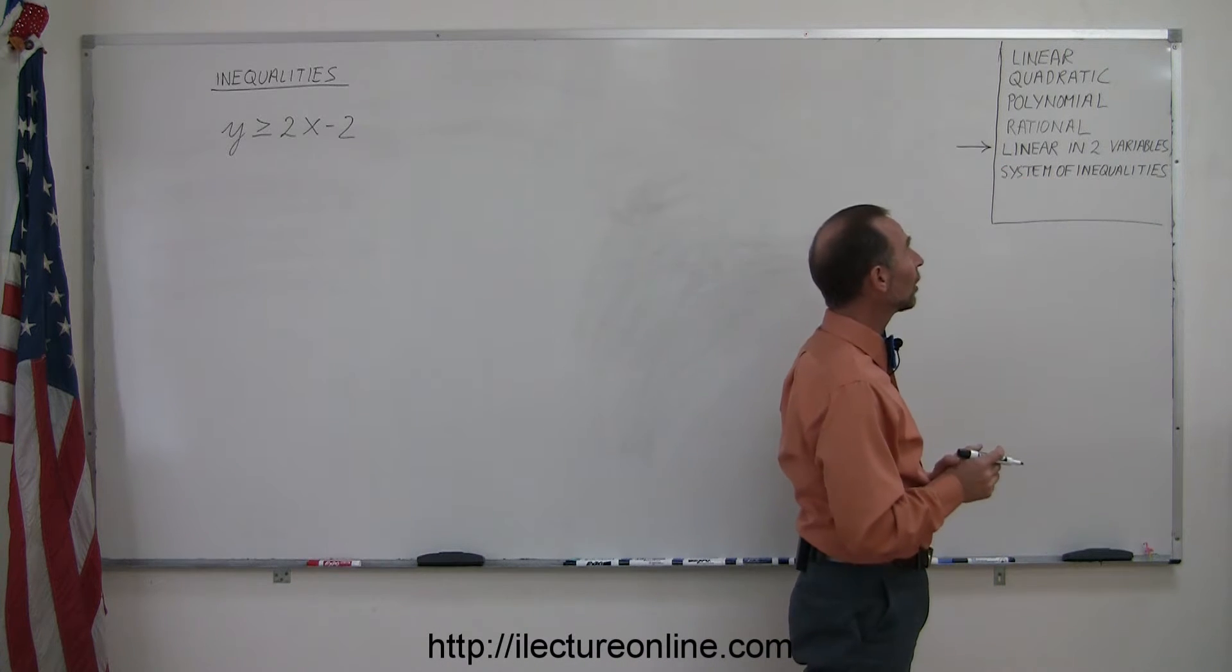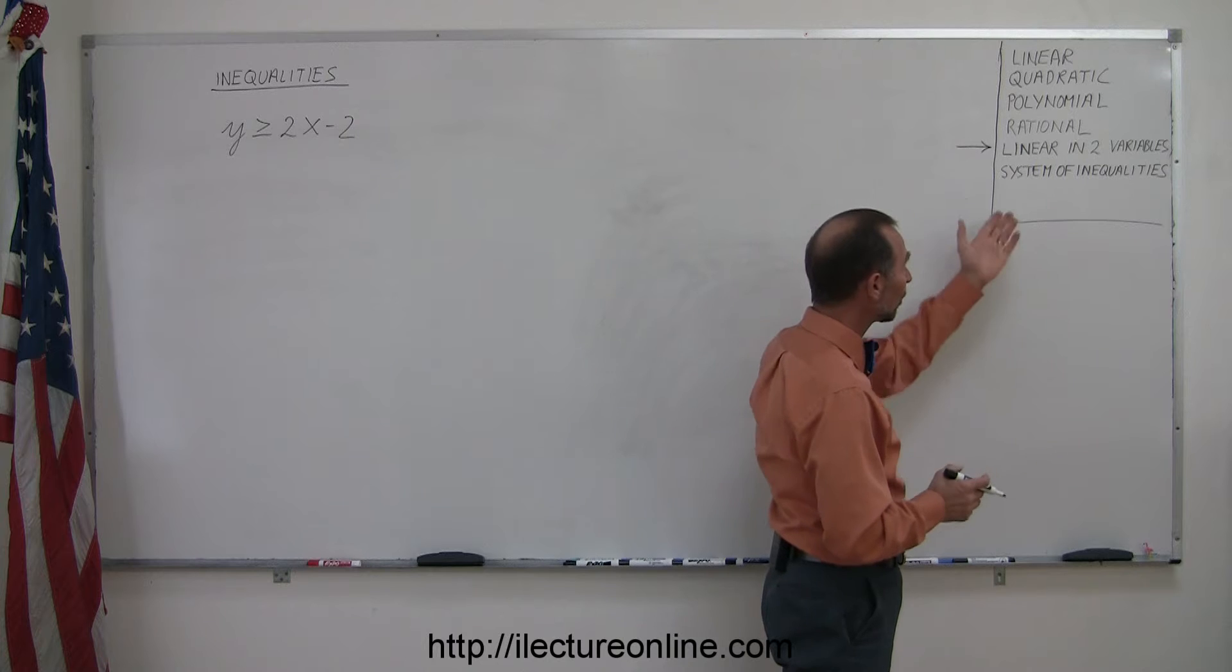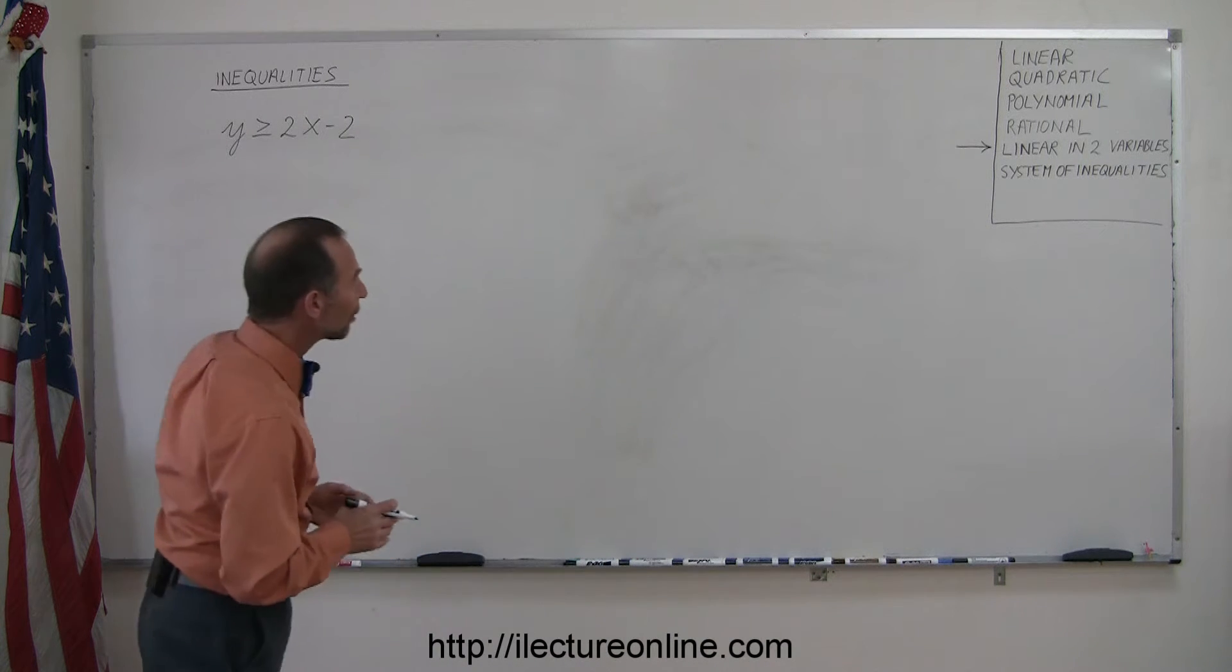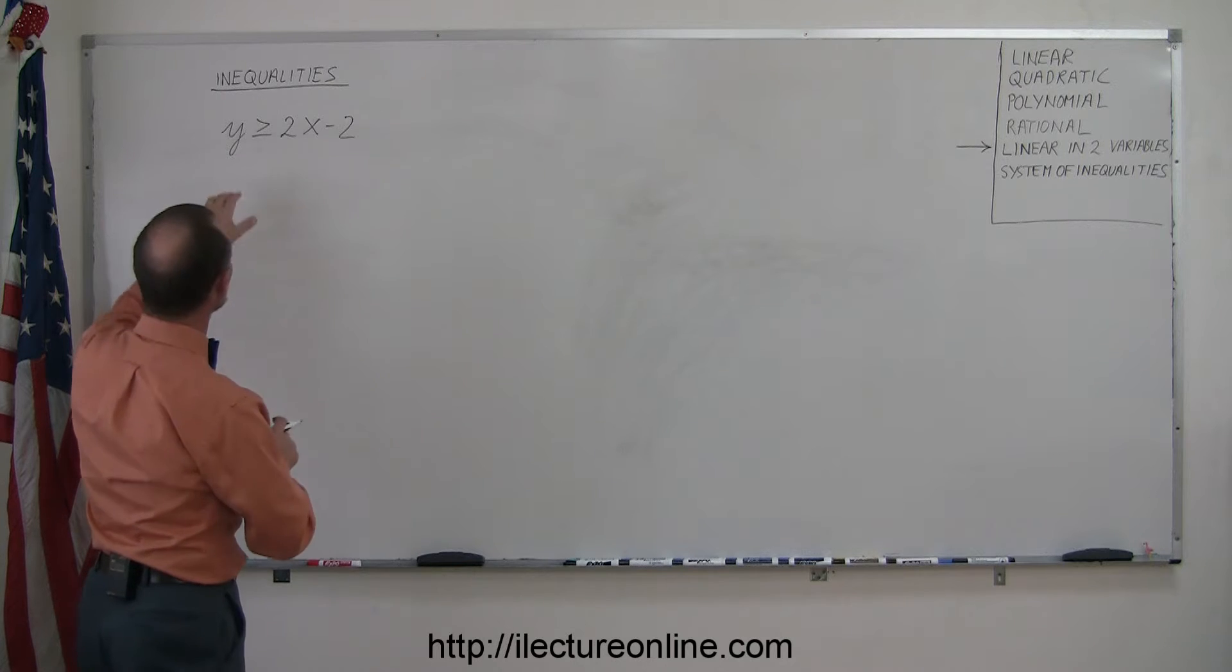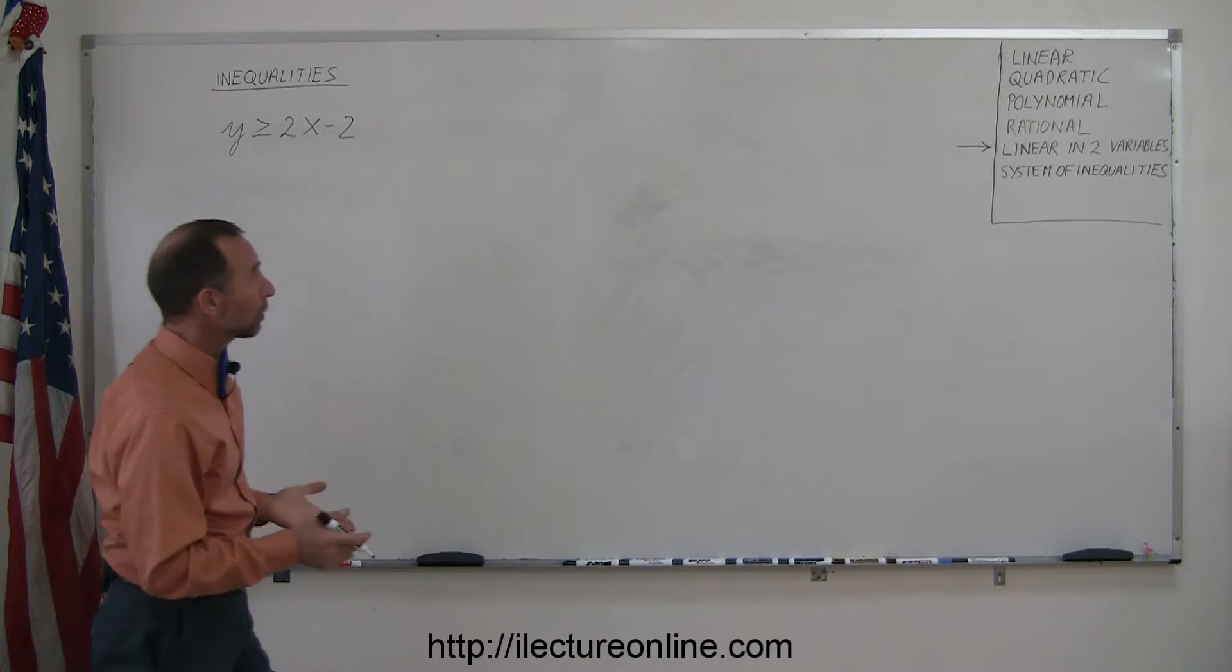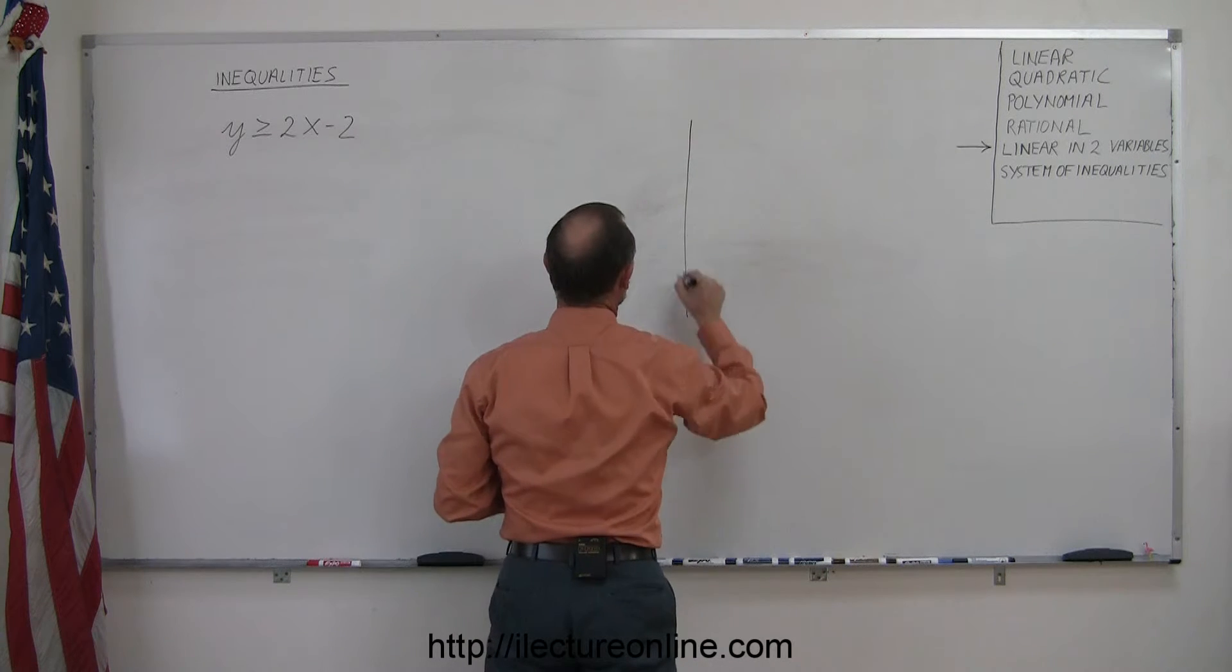One is the linear inequality in two variables, and the last one is the system of inequalities. What happens here is that we end up with two variables, y and x, and so if we're going to find a solution, we need an xy-plane, a Cartesian coordinate system.